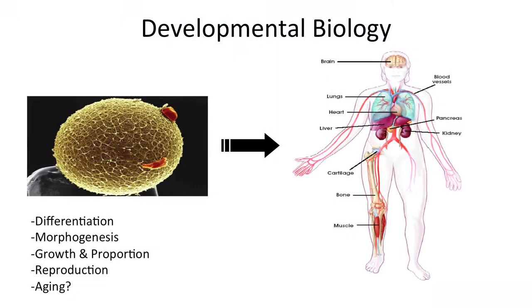One of the other issues is morphogenesis. Not only do cells become different in terms of the genes they're expressing and what the cell's function is, but also they form different shapes together. Morphology is the study of form — how does the nose actually form in the shape that it forms in? How do cells organize themselves in three dimensions? So the issue of morphogenesis, and also the issue of growth and proportion, is a really interesting question in development.